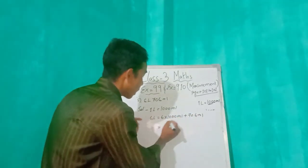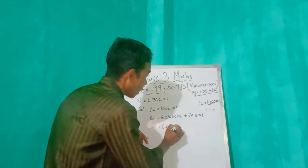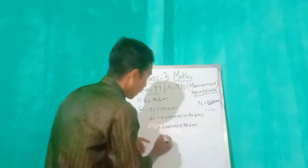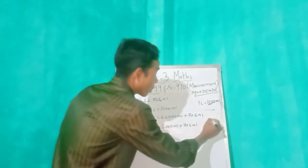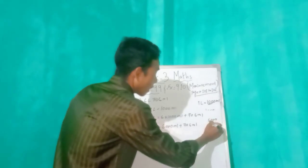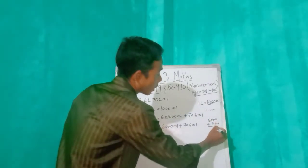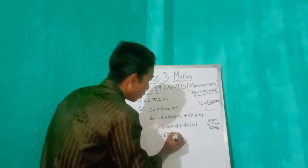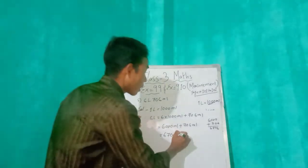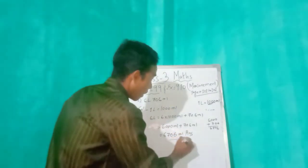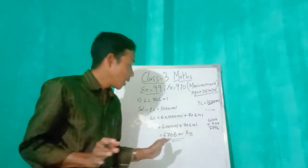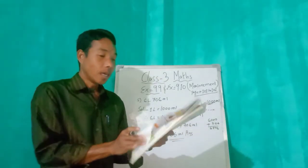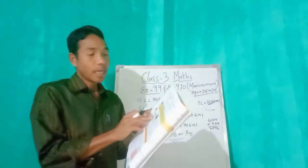So the total is 6000 mL plus 706 mL. Now we add: 6000 plus 706 equals 6706 mL. This is our answer. Have you got it? Yes, it's very easy!